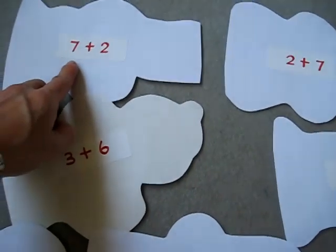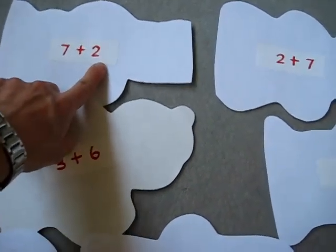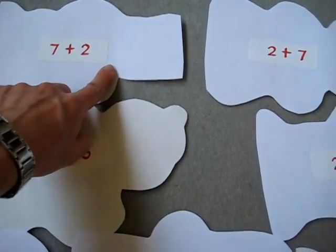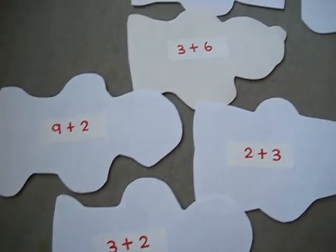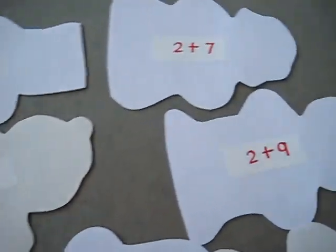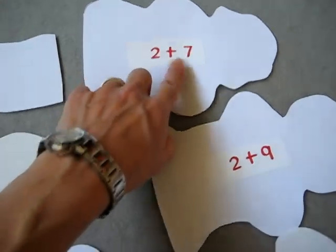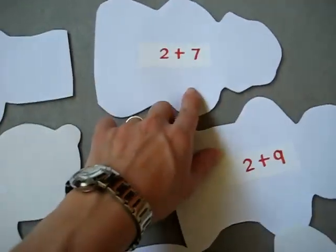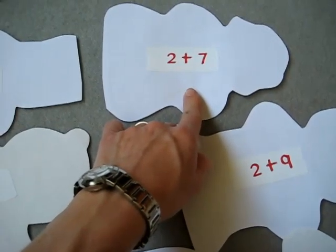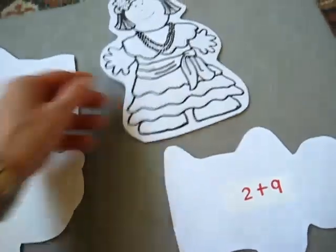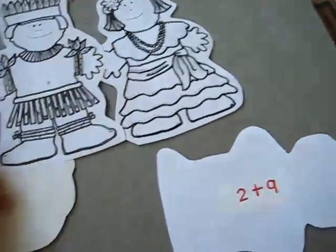He has to pick one: seven plus two. He uses his little rods to find out what seven plus two is, and then he has to find the match. Seven plus two equals nine is the same as two plus seven equals nine. He used his rods here and the same rods here to make sure it was the same answer, and it was. That means it's a pair.